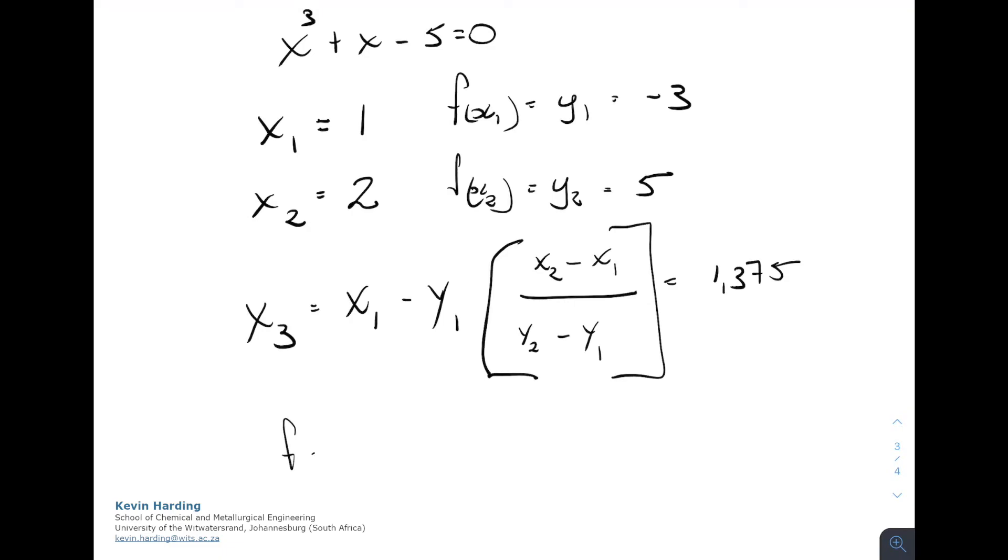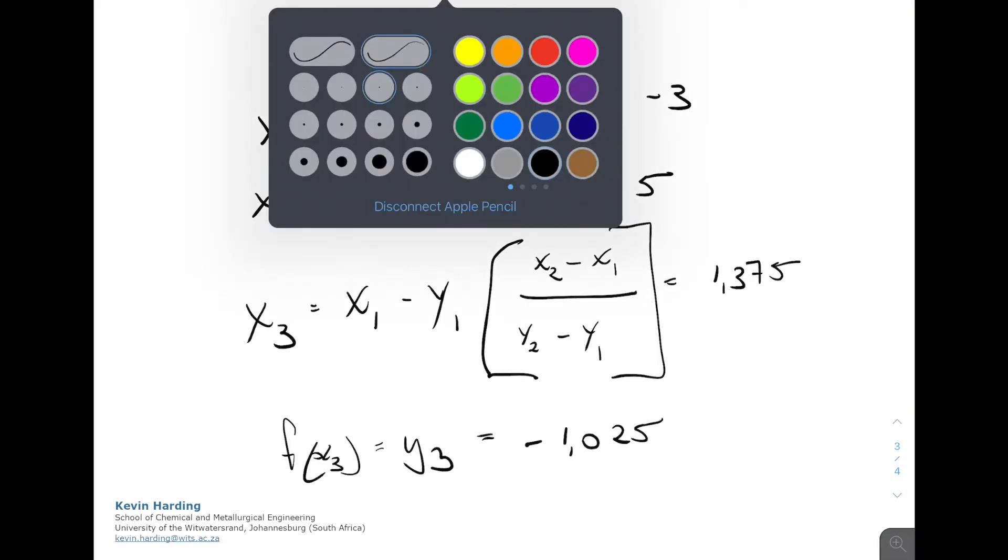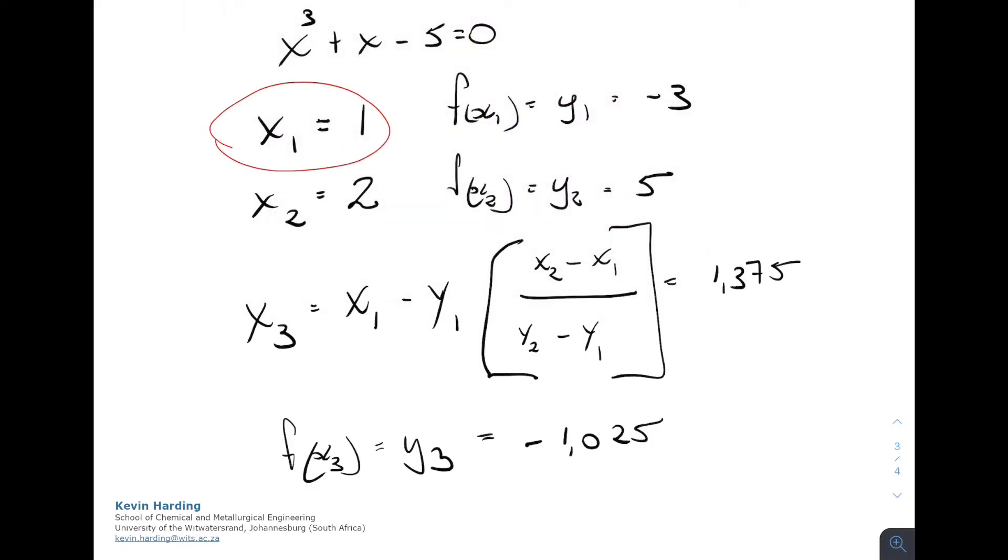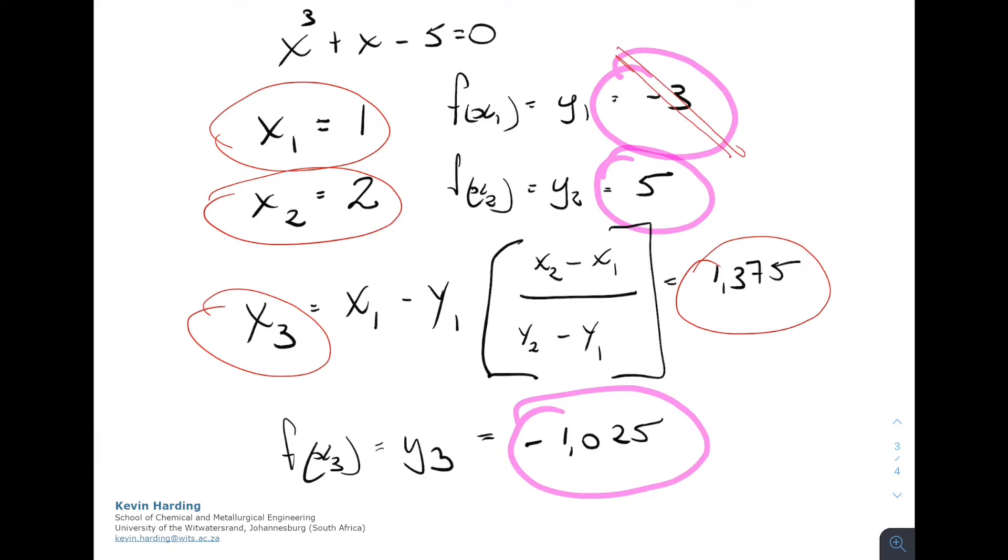More importantly though, what happens if we get the f of x3 or y3, and if we put that into the original equation at the top, the x³ plus x minus 5, we get a value of minus 1.025. So we now have three sets of values, x1, x2, and x3. So those values, this is where x3 is 1.375. In terms of the y values for that, we have a negative 3, a positive 5, and a minus 1.025. So because we have a negative as our y3, we now need to discard our original negative y value. So we discard x1. We are now going to look at using y2 as well as y3 in our next step.